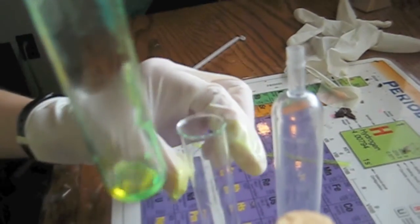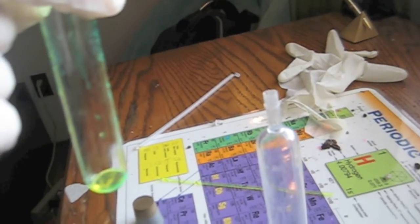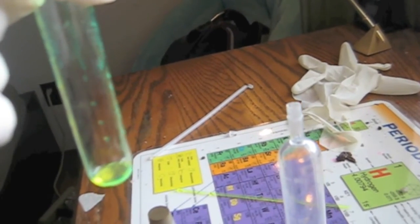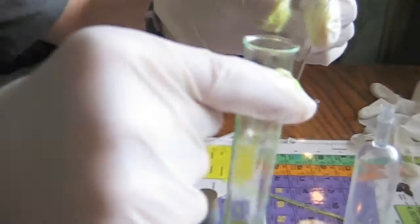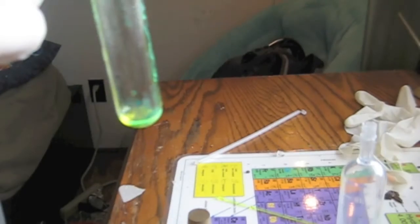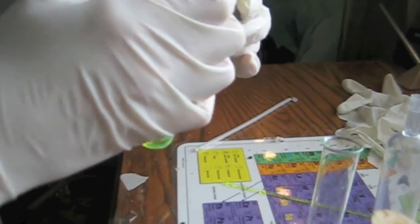So here we have the two chemicals that are inside a glow stick. When mixed, they'll produce a glow. Now let's go to dark and test it out.